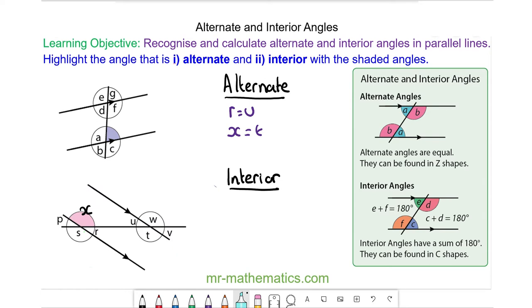And the interior angles are angle X and angle U, and they both add up to 180 degrees. And angle R is alternate with angle T. So R plus T is also equal to 180 degrees.